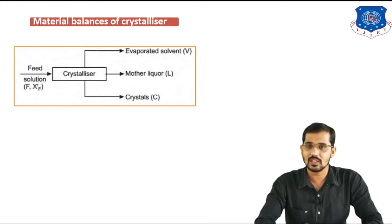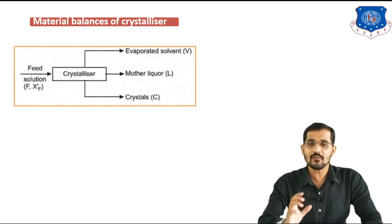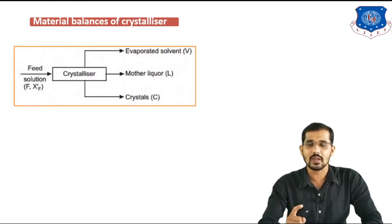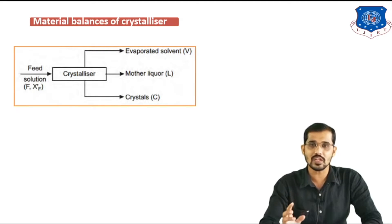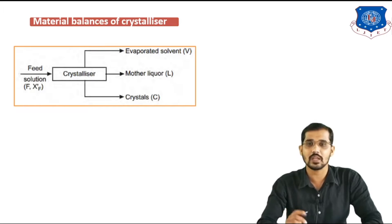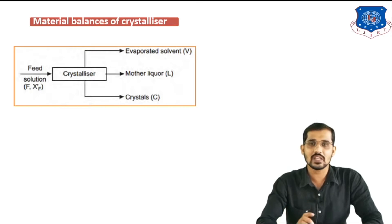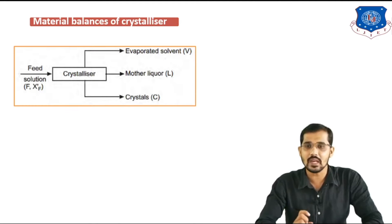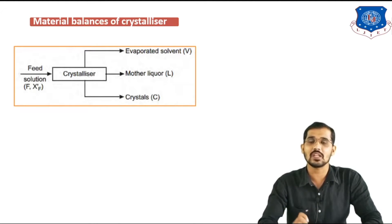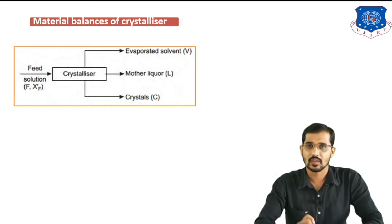This is the block diagram for the crystallization operation. There is one inlet stream and three outlet streams. The inlet stream is the feed solution to be crystallized, and the outlet streams are: evaporated solvent (represented by capital V), mother liquor (represented by capital L), and crystals — our required product — represented by capital C.